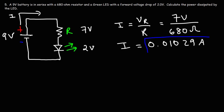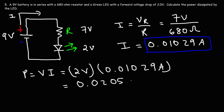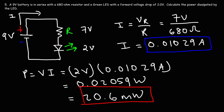Now that we have the current, we can calculate the power dissipated by the LED. Power is voltage times current: there's a voltage of 2 volts across the LED and a current of 0.01029 amps flowing through it. The power dissipated is approximately 0.02058 watts, and multiplying by 1,000 we can say this is approximately 20.6 milliwatts. That's the power dissipated by the green LED.